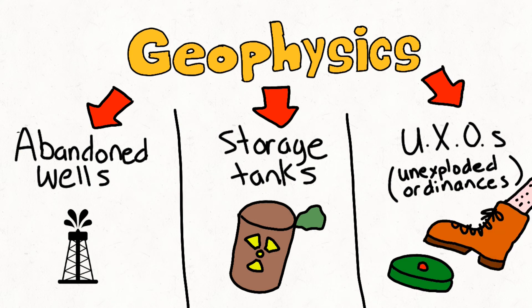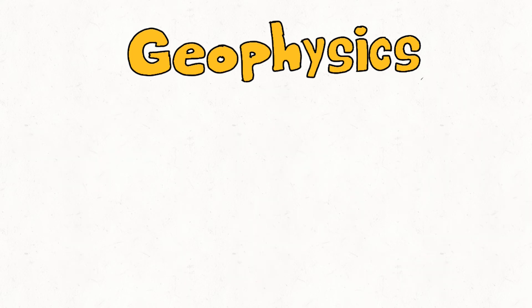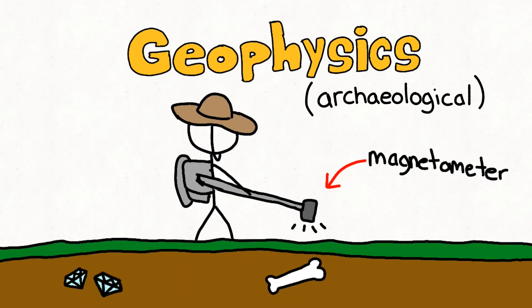Unexploded ordinances are a type of land mine responsible for the death and severe injury of 15 to 25 thousand people a year. The use of magnetism isn't only limited to finding hazardous objects. Geophysicists also use magnetism to find buried archaeological artifacts, as it allows them to scan the near surface without disturbing the ground, helping preserve the artifacts.